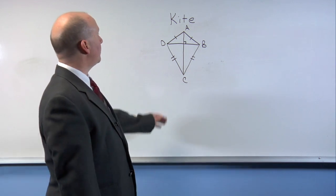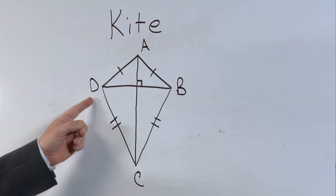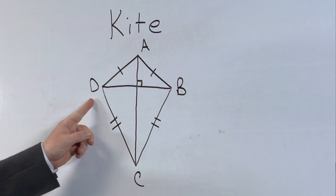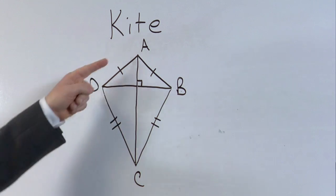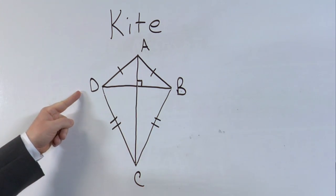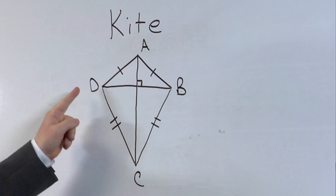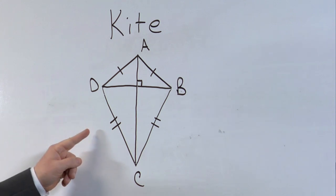Behind me is a kite A, B, C, D, and notice that sides A, B and A, D are marked congruent, and sides B, C and D, C are marked congruent.